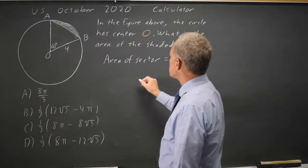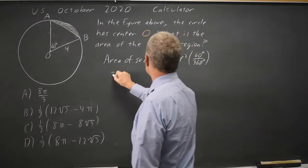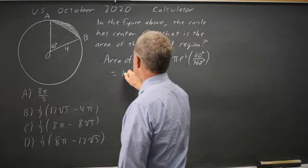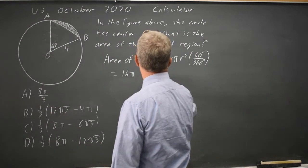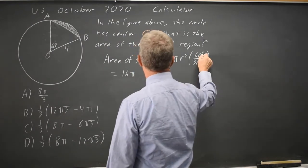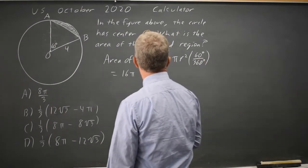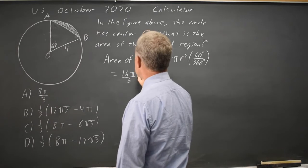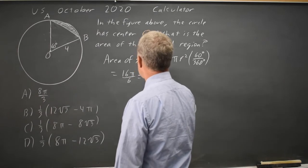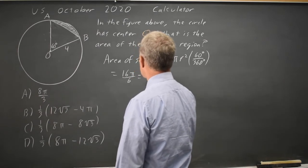Since the radius of the circle is 4, that is 16π. Times 60 over 360, which simplifies to 1 over 6, so the sector area is 8π over 3.